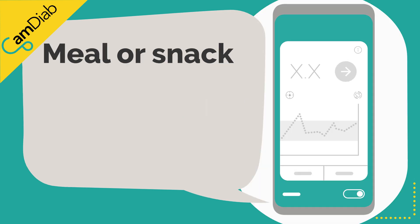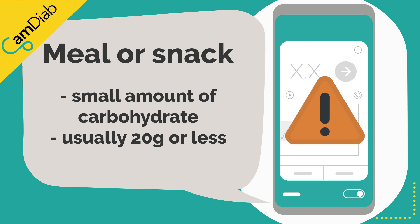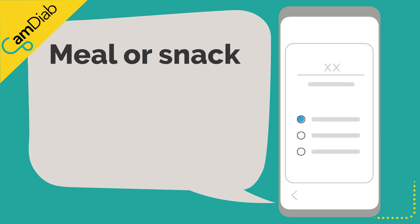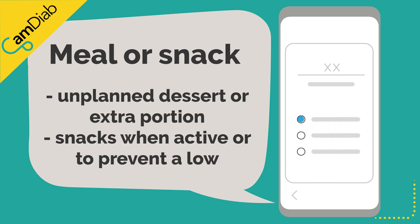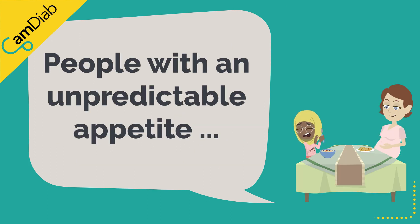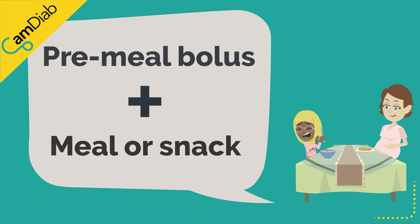Meal or snack can be used when a small amount of carbohydrate is being consumed, usually around 20 grams or less. Please consider giving a bolus via the bolus calculator to cover larger carbohydrate amounts. You can also use meal or snack for an unplanned dessert or extra portion eaten after a meal that has already been bolused for. Snacks when active or to prevent a low can also be put in meal or snack. People with an unpredictable appetite might like to split their bolus and give a pre-meal bolus for the minimum amount of carbohydrate they will eat, putting the rest in meal or snack.